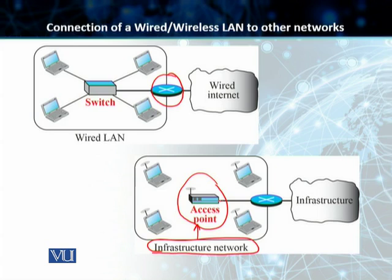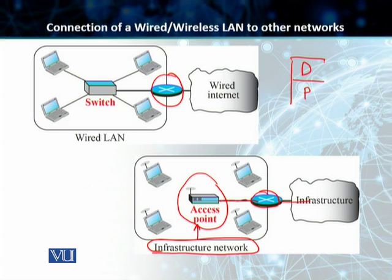The access point is still connected to the external networks by using a wired connection. This access point is used to connect our wireless ad hoc network — which, because of the presence of this access point, is now called an infrastructure network — to the outside world. One additional point is that the wireless LAN exists on the first two layers of the TCP/IP suite — layer 1 and layer 2. These two layers is where your wireless LANs will exist.